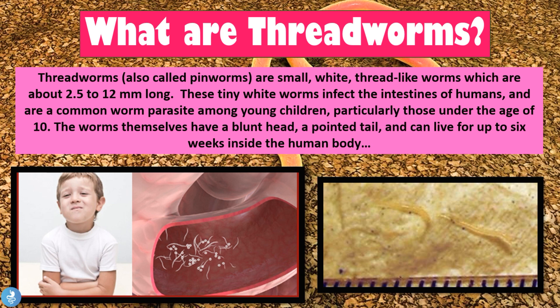These worms are called threadworms because they have a thread-like structure. They are small, white, and measure from 2.5 to about 12 millimeters long — around a centimeter — with a blunt head and a pointed tail, and they infiltrate the intestines in the human body. This is a very common disease worldwide, affecting children from kindergarten through primary school levels.